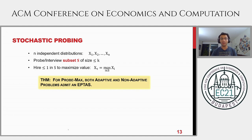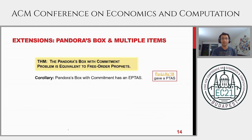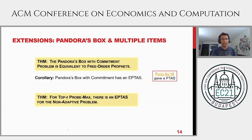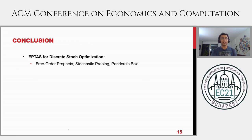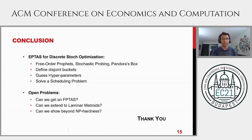To conclude, our results extend to stochastic probing problems such as probe max, where you interview at most k candidates — you can still get an EPTAS. The main techniques are the same: define buckets and hyperparameters, but the scheduling subproblem becomes more complex, turning into a multi-dimensional problem that can nonetheless be handled. We also have results for Pandora's box and for selecting R items, obtaining EPTASes for many of these problems. The high-level technique is always to define these discrete buckets, obtain hyperparameters, and solve a scheduling problem. Open problems include whether we can get an FPTAS or show hardness beyond NP-hardness. Thank you.